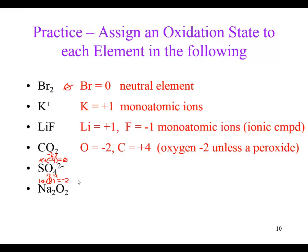If I add eight to both sides to isolate my variable, I get negative two plus eight, so the oxidation number for sulfur would have to be a positive six in the sulfate ion.